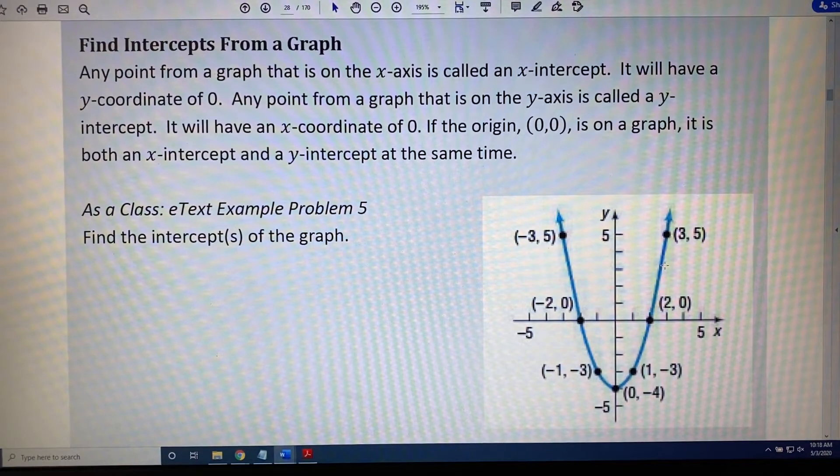If the origin (0, 0) is on a graph, it is both an x-intercept and a y-intercept at the same time.